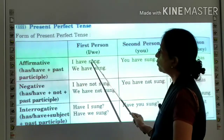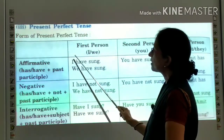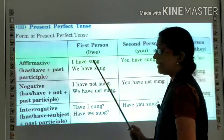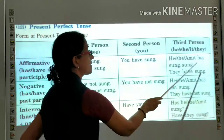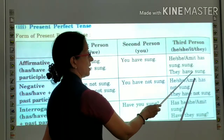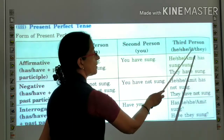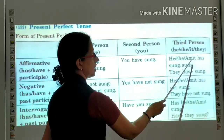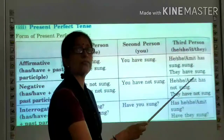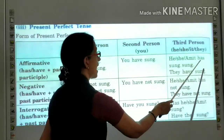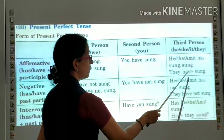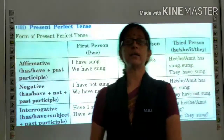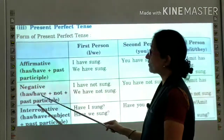Here we have used the helping verb 'have' with the subject. We have sung, you have sung, he, she, it has sung, and they have sung. So see how the third form of the verb is used with the helping verb. If the subject is a name or he or she, we have to use 'has'. With 'they', which is plural, we use 'have'. With 'you', we also use 'have' as the helping verb.